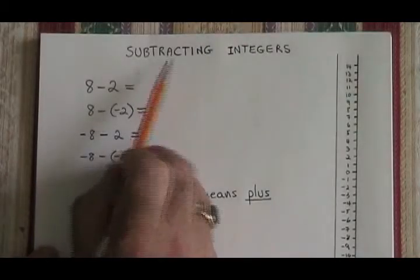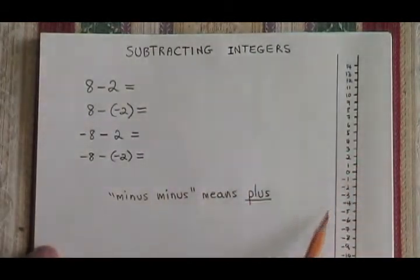When we subtract integers, our number line turned on its side, our thermometer, is useful again.